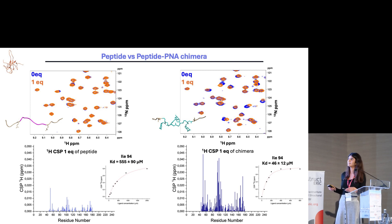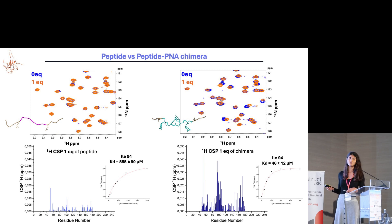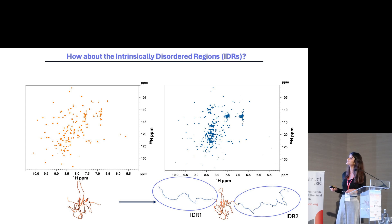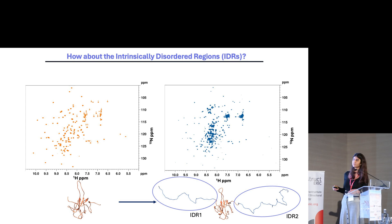This higher perturbation suggests greater affinity, which is also confirmed by the Kd calculated from the most affected residues. The last question is: what about the intrinsically disordered regions? So I moved from the N-terminal domain construct to the extended construct that also comprises the two intrinsically disordered regions.